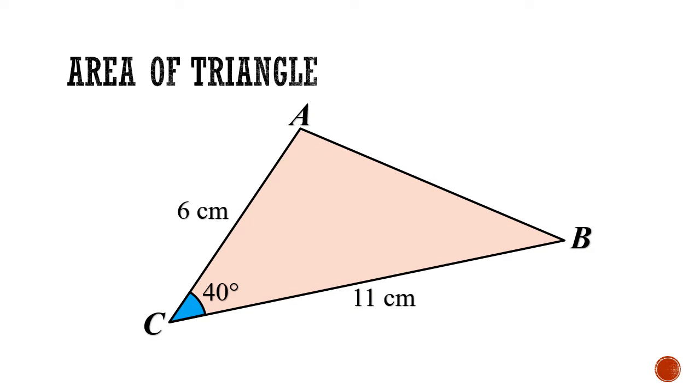Let's put aside the trigonometry formula for now, and let's go through a work example of how to find the area of a triangle given that side AC equals 6 cm, side BC equals 11 cm, and the angle ACB is 40 degrees.